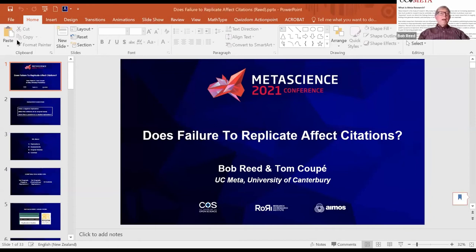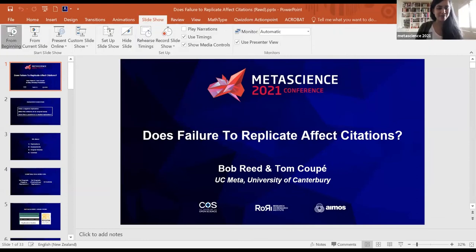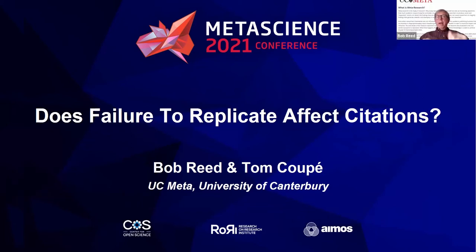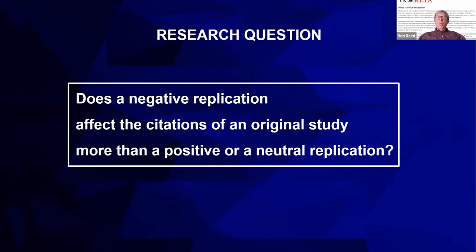I'm Bob Reed. I'm from the University of Canterbury. I work with a research group called UC Meta, and this paper I'm going to report on is written with my colleague Tom Coupe, also at Canterbury. The research question we're going to be looking at in this study is: do negative replications affect the citations of an original study more so than positive or neutral replications? That's our research question.